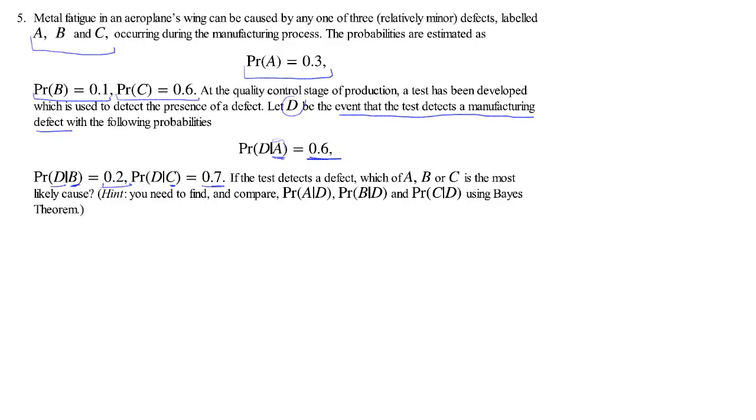So now the question is if a test detects a defect, which of A, B, or C is the most likely cause? So what we are after is probabilities which are conditional on D, conditional on the test having said there is a problem. In particular we are after the probability of A conditional on D, probability of B conditional on D, and the probability of C conditional on D. We are given the hint already that these are the probabilities we need to find and that we need to use Bayes theorem.